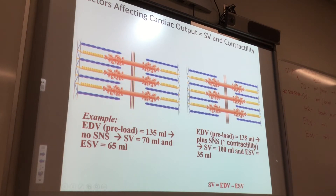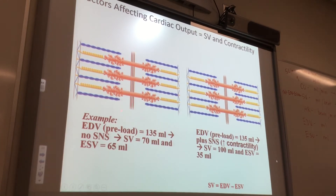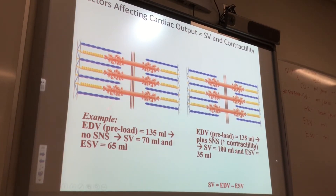Titin is elastic tissue, so it helps the sarcomeres be springy. And this is the M line right here — the M line is where the myosin attaches. In heart one, the end-diastolic volume is 135 mils. In heart two, the end-diastolic volume is also 135 mils, so they're both stretched to the same volume and their sarcomeres all look the same.